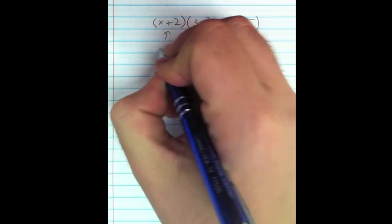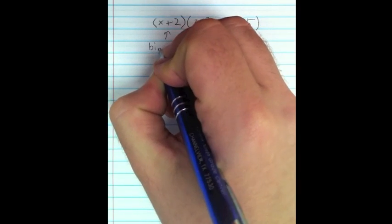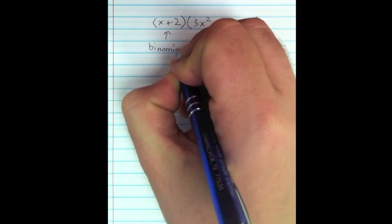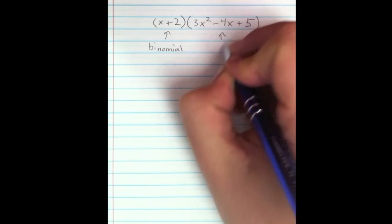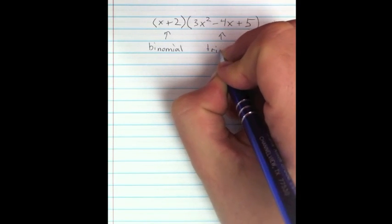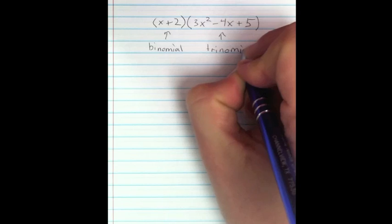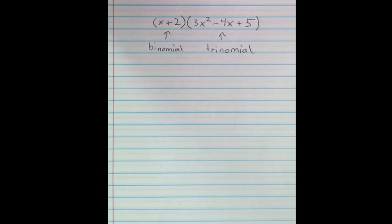This next example we're going to try is a binomial being crossed with a trinomial, or a binomial times a trinomial. In this case, our binomial is x plus 2, and our trinomial is 3x squared minus 4x plus 5.